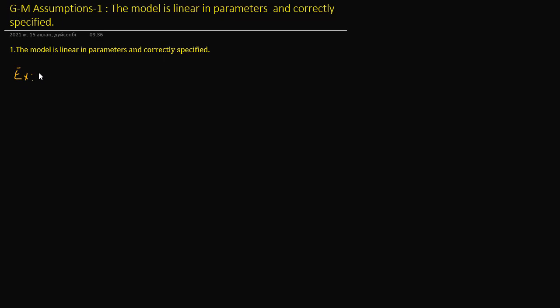Linearity means two things: linear in parameters and linear in variables. By assumption, we require the model to be linear in parameters, not necessarily linear in variables.